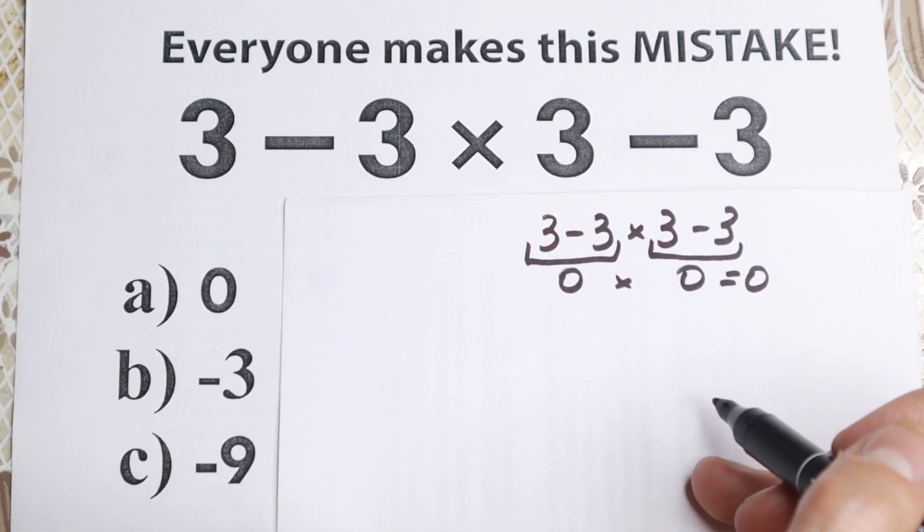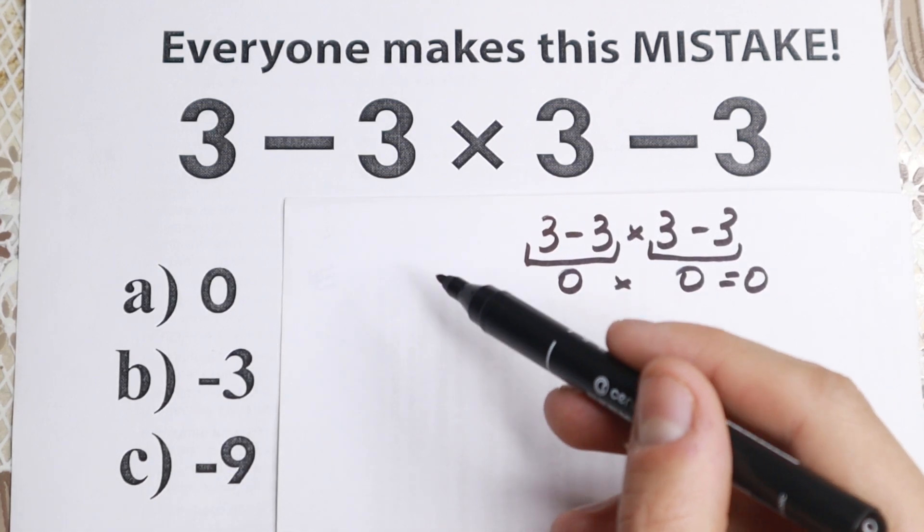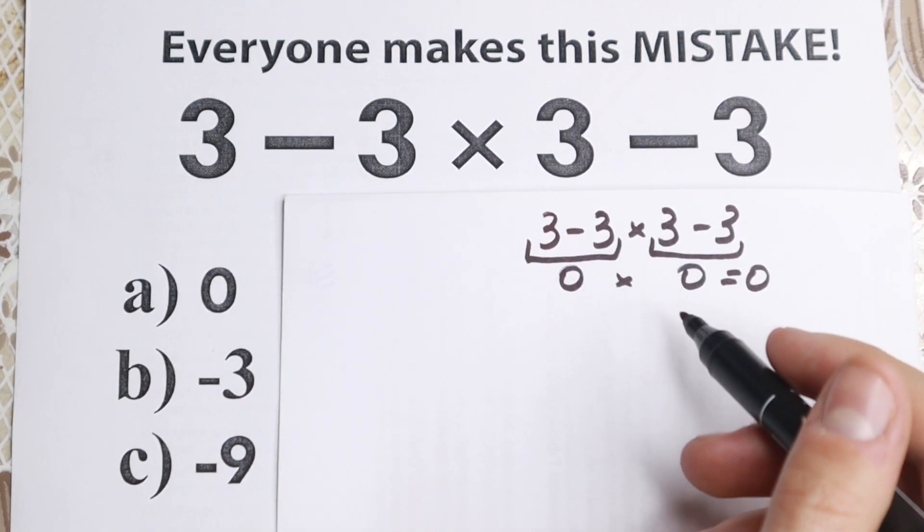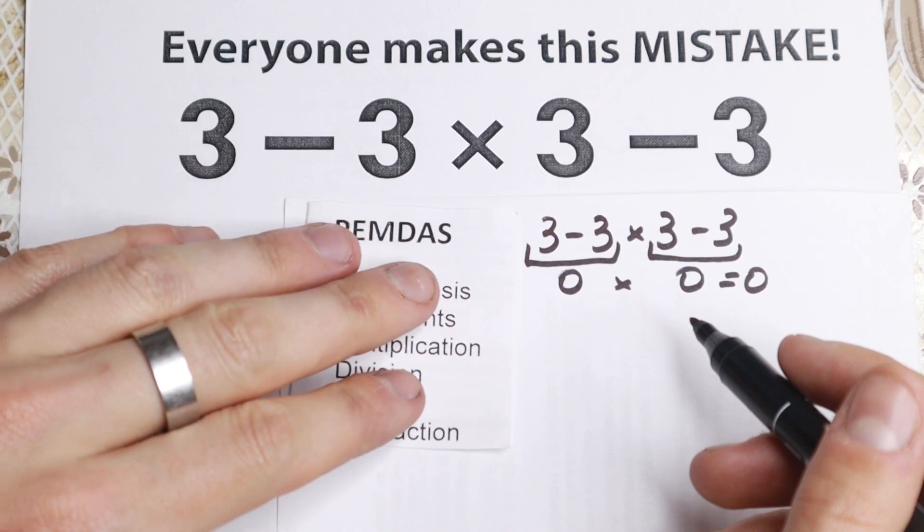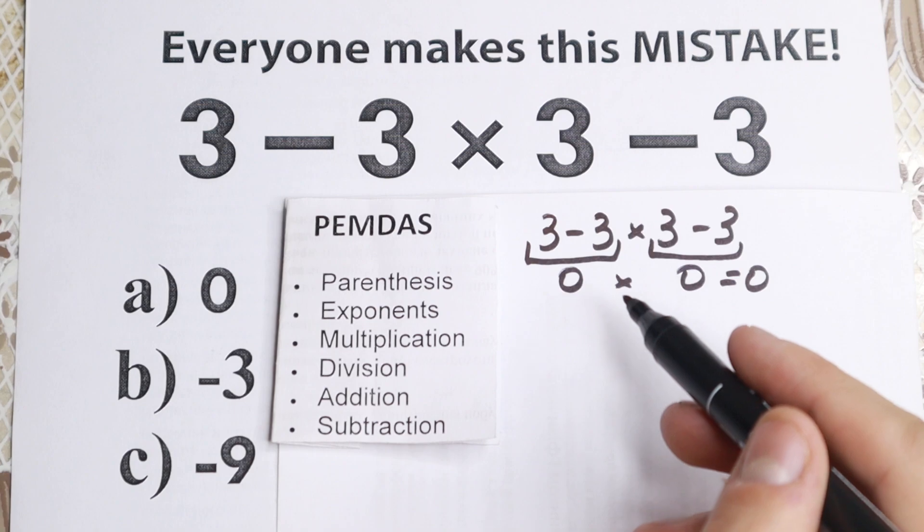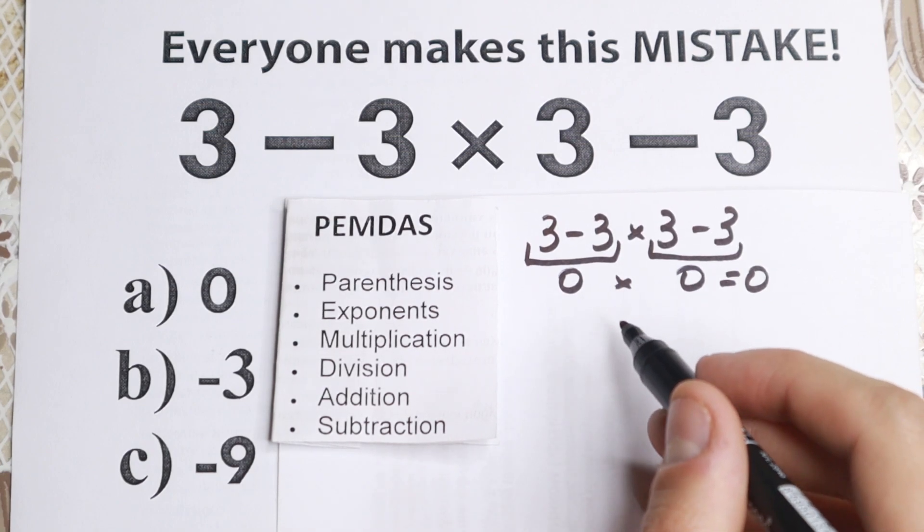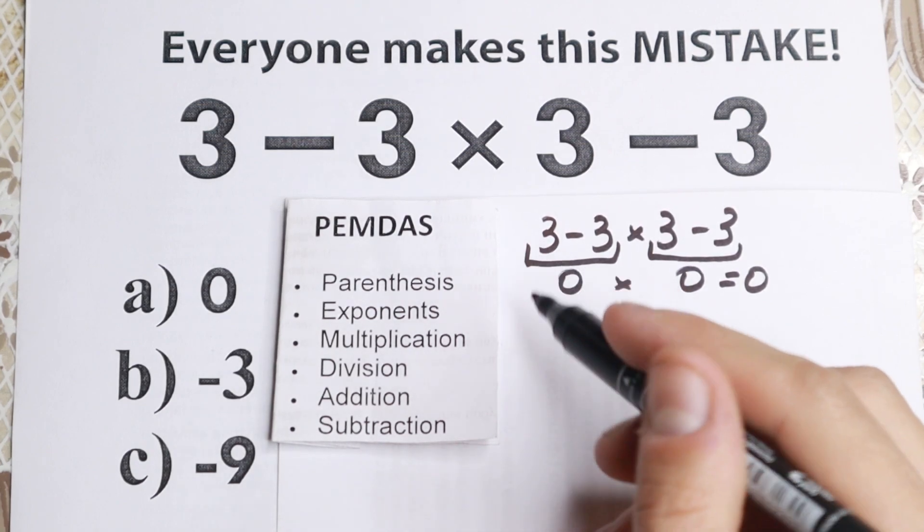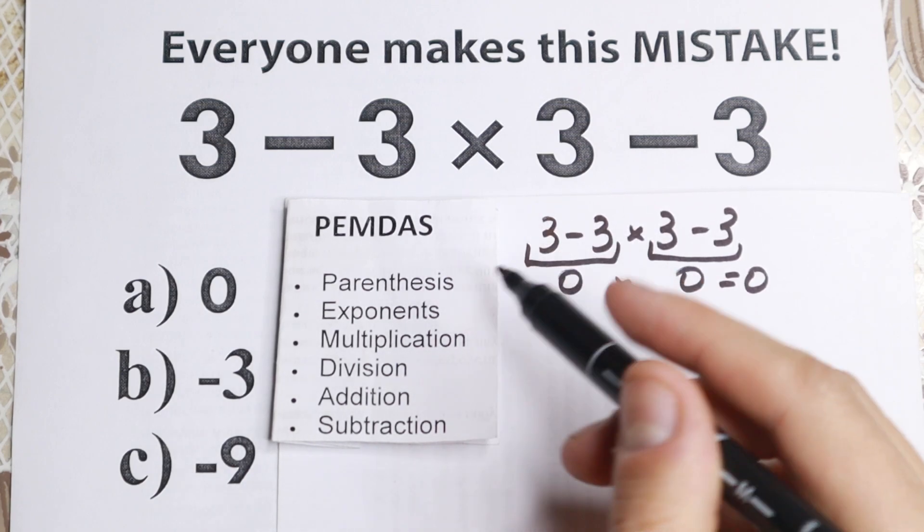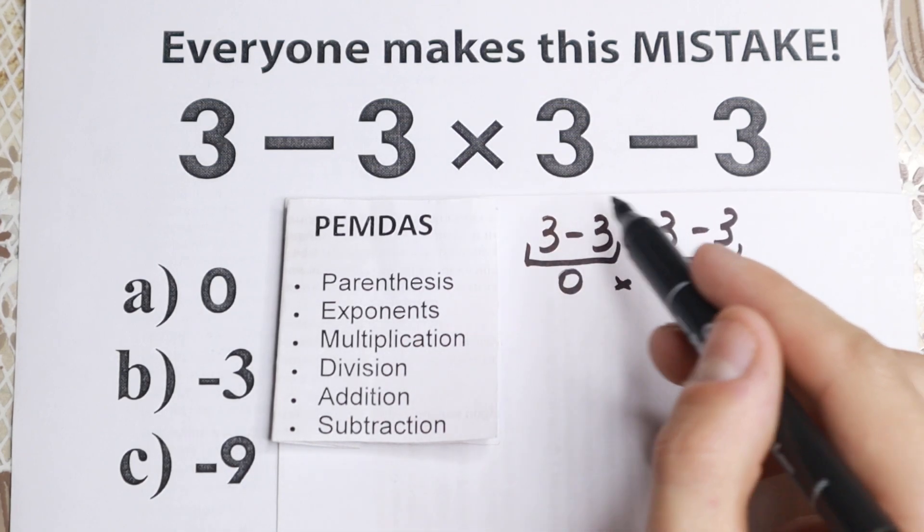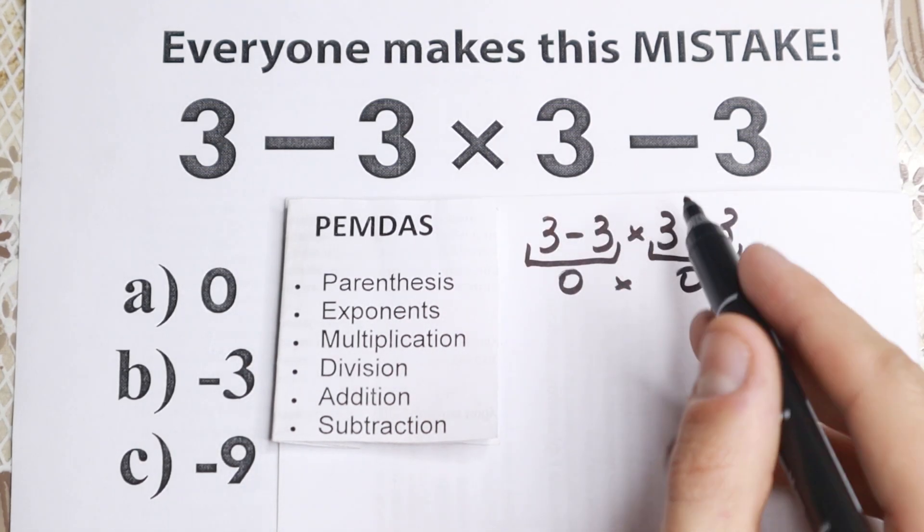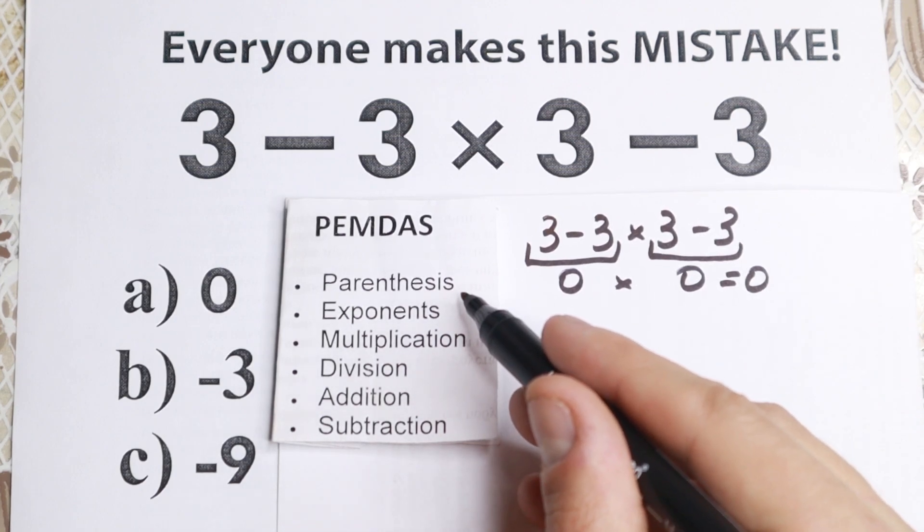Obviously whatever order you select is going to create a different answer. So we need to understand what is the correct order to do this problem. If you're talking about order, this is the main popular order in the world: PEMDAS order. Let's solve it step by step according to this order of operation. The first step is parentheses. Are there any parentheses right here? No, I don't see any. We don't have parentheses or brackets, so we skip this first part.